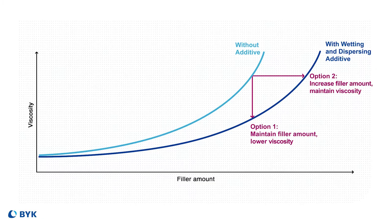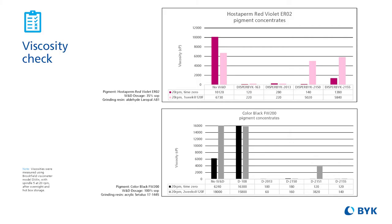When we did the viscosity check to evaluate three different wetting and dispersing additives using two different pigments — Hostaperm Red Violet and Carbon Black FW 200 — we found a similar observation. As shown in the two separate graphs, the blank control has a very high initial viscosity that is not even stable over hotbox storage time. The sample containing Disperbyk-2013 in both cases not only has low initial viscosity, but this viscosity is also stable over the hotbox storage time. This tells us that the viscosity check can help us choose the right wetting and dispersing additive for a specific resin or pigment system.